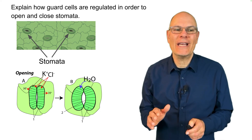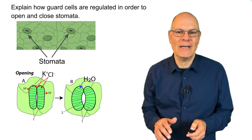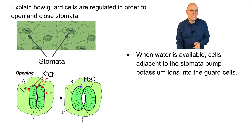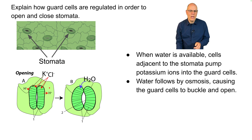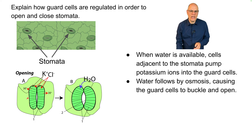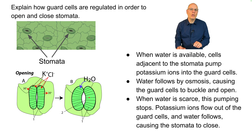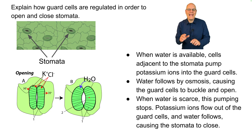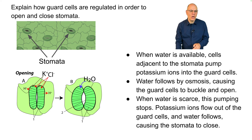Explain how guard cells are regulated to open and close the stomata. When water is available, cells adjacent to the stomata pump potassium ions into the guard cells, making the guard cells hypertonic to the adjacent cells. Water follows by osmosis, causing the guard cells to buckle and open up. When water is scarce, the pumping stops, potassium ions flow out of the guard cells, and water follows by osmosis, causing the stomata to close.